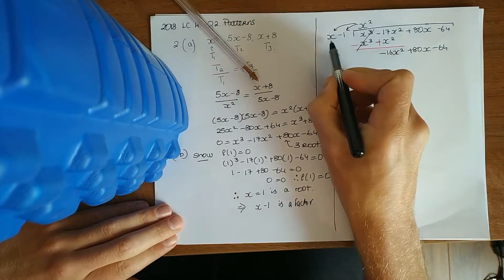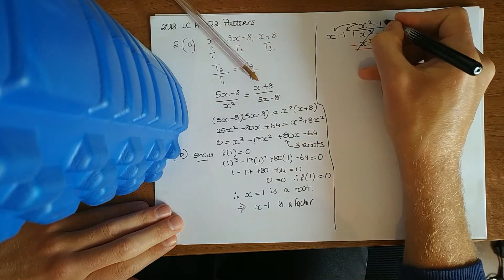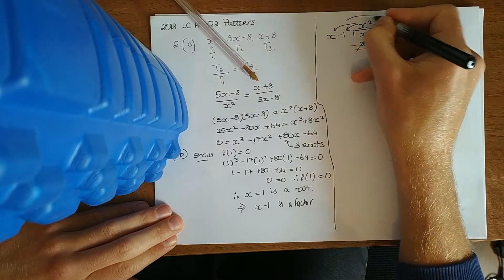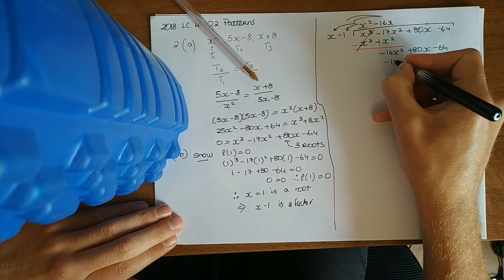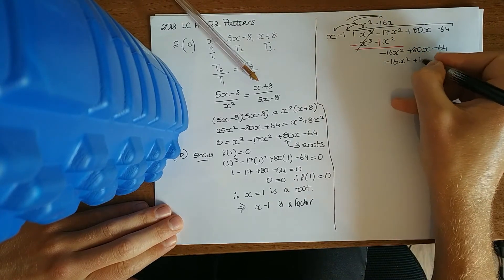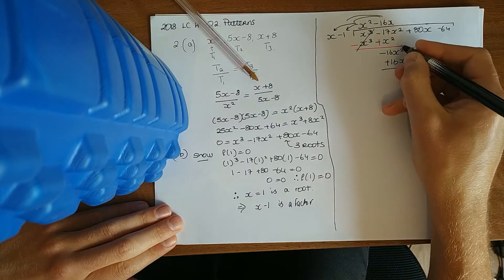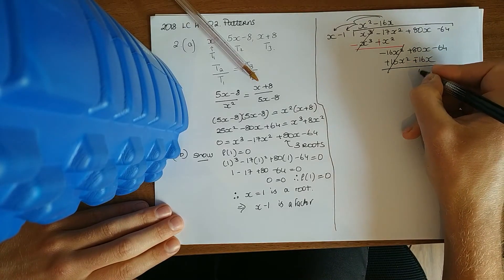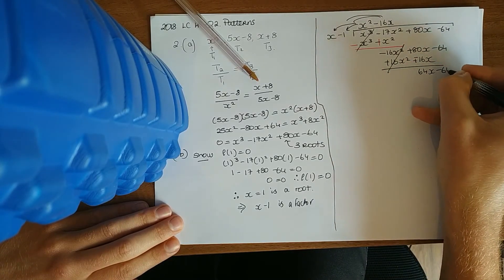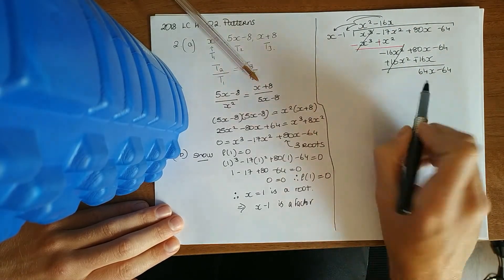And then repeat the process. What do you multiply x by to get minus 16x squared? Minus 16x. Multiply it down, draw your line, change the signs, and then there should be no remainder, so we'll know I've got this right.